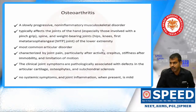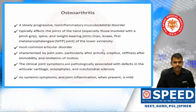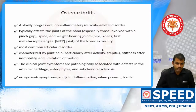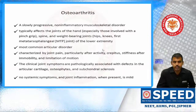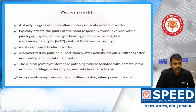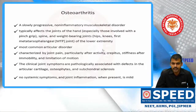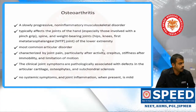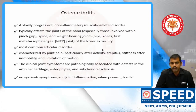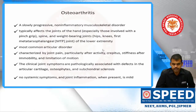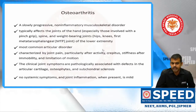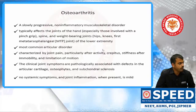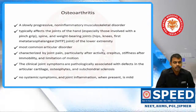This is the most common articular disorder, characterized by joint pain particularly after activity. It causes crepitus and stiffness after immobility and limitation of movements. RA and inflammatory arthritis differ from non-inflammatory arthritis by the duration of stiffness — less than 30 minutes in non-inflammatory, more than 30 minutes up to 1 hour in inflammatory. Non-inflammatory arthritis has joint pain after activity and stiffness after immobility, which is called the gelling phenomenon.